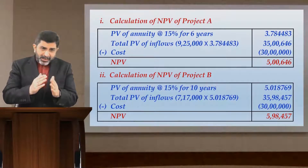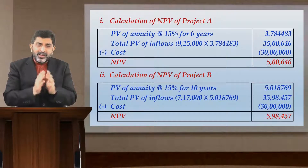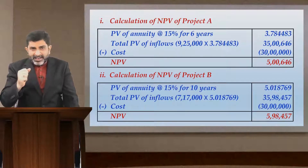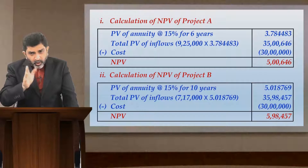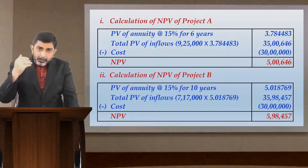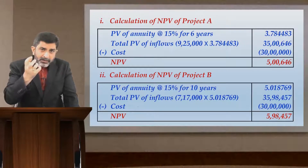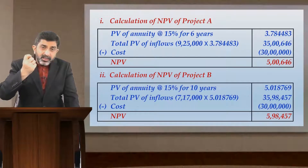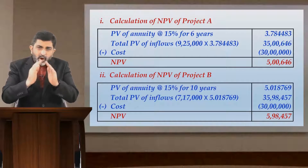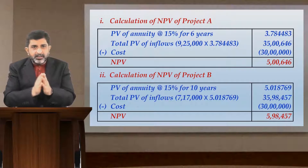Looking at NPV alone, project B is definitely higher at 5,98,457. But that NPV is generated over a project life of 10 years, so it is not directly comparable with project A, which has a life of only six years. What we will do is convert these NPVs onto a common base — a per annum base.